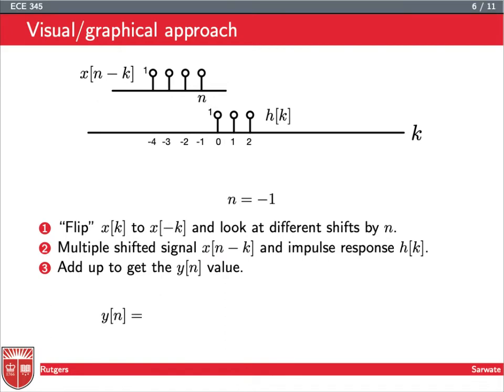Here we have the k axis. We're going to flip x[k] to x[-k], and then look at different shifts by n. So this becomes n, and this becomes n-1, and this is n-2, and this is n-3. If I want to look at the output y[n] at time n equals 0, then this n here is 0, and it's -1, -2, -3. So that's right when the input x hits the system h.